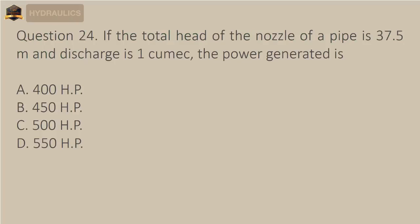Question 24: If the total head at the nozzle of a pipe is 37.5 meters and discharge is 1 cumec, the power generated is — A) 400 HP, B) 450 HP, C) 500 HP, D) 550 HP. The correct answer is option C: 500 HP.